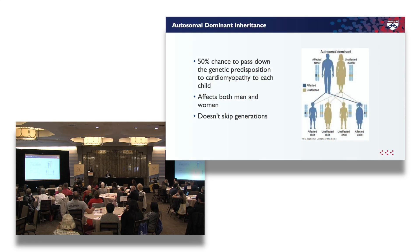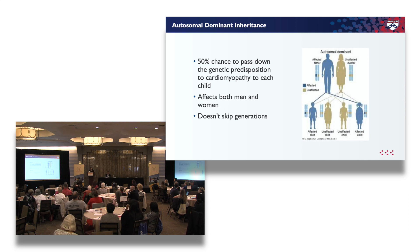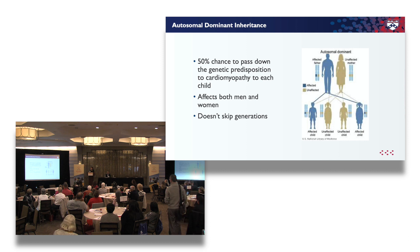Dr. Rosano will touch on how these conditions are transmitted from generation to generation, but suffice it to say that one genetic change has a fifty percent chance of being passed on to each child — fifty percent that you got it from mom or dad, and fifty percent with each child that it's passed on.